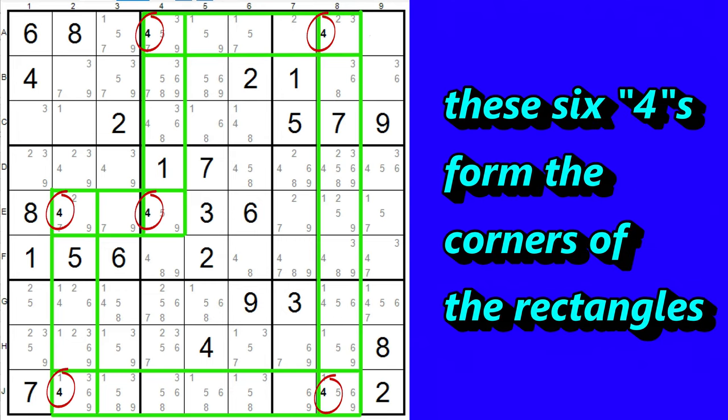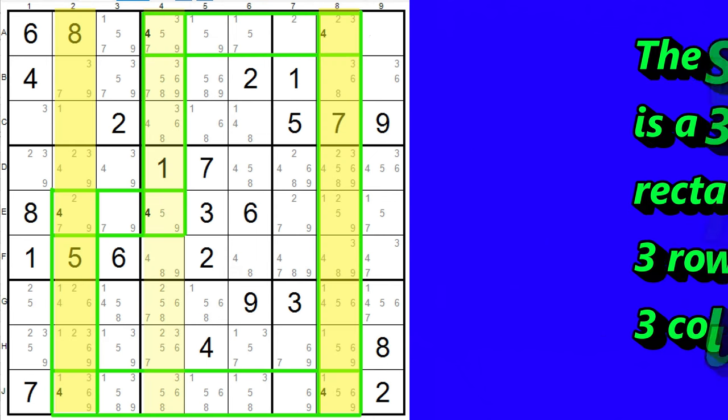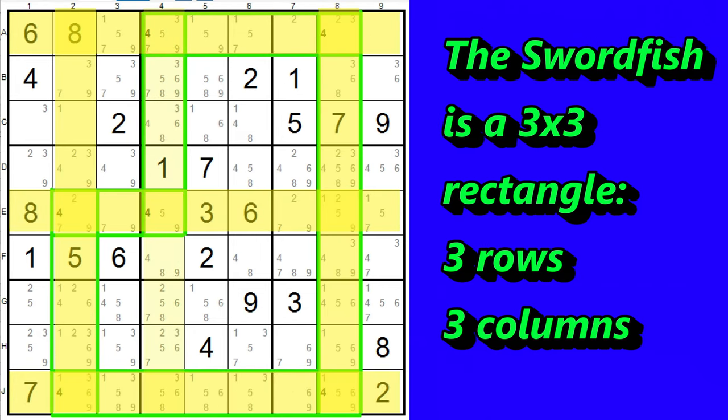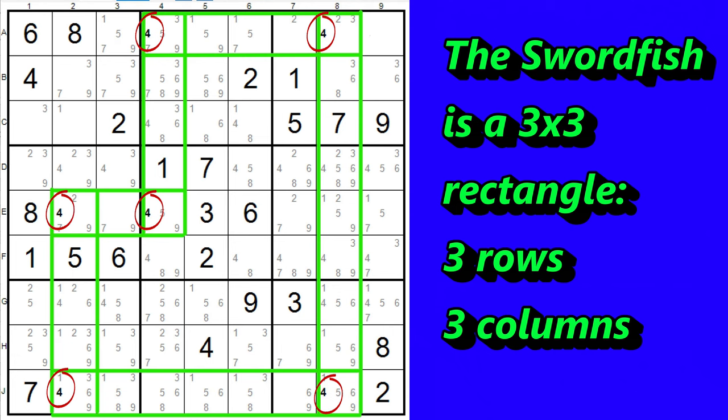These 4s are located in six cells, which form the corners of overlapping rectangles. They also share three columns. Three rows, three columns. So, it's a 3x3 rectangle, otherwise known as a swordfish.